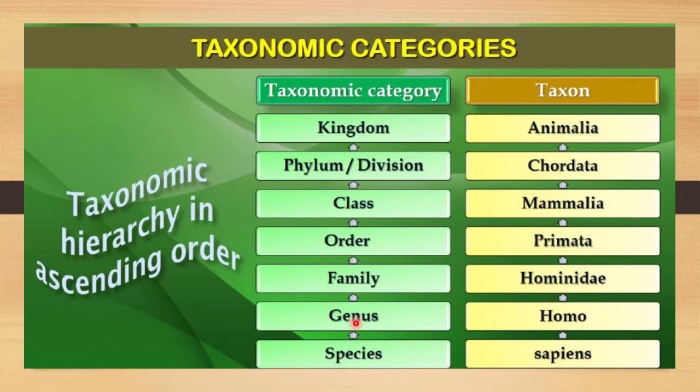This is the hierarchy in ascending order, starting from the lowest. So in ascending order: species sapiens, genus Homo, family Hominidae, order Primata, class Mammalia, phylum Chordata, and kingdom Animalia. According to that taxonomic category, a taxon will be there.